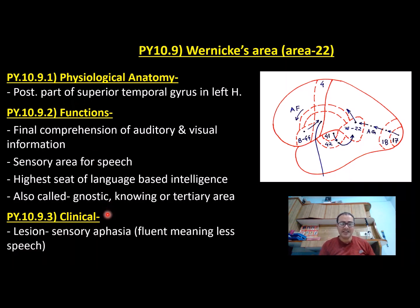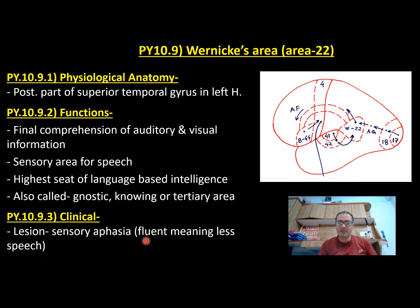Finally, the clinical part: a lesion in Wernicke's area causes sensory aphasia, in which the person speaks a lot — word output is increased and speech is fluent. It is fluent because Broca's area shows abnormal hyperactivity, possibly due to denervation hypersensitivity. But as Wernicke's area is not working, the speech does not make any sense — lots of jargon and new imaginary words that do not make sense. That was about Wernicke's area.